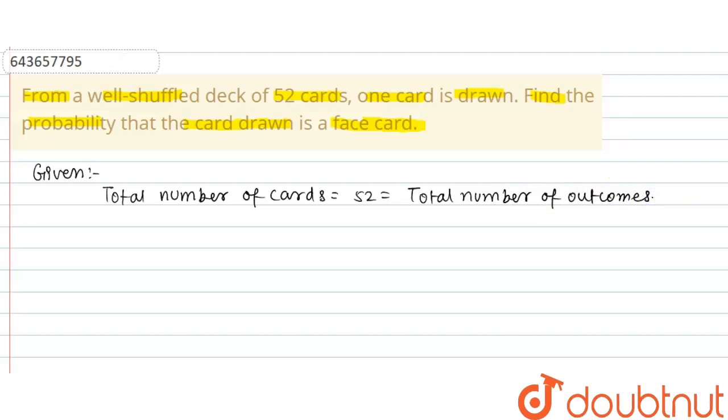Now we will understand what is face card. So three cards—that is King, Queen, and Jack—on which face will be appeared, these cards are face cards.